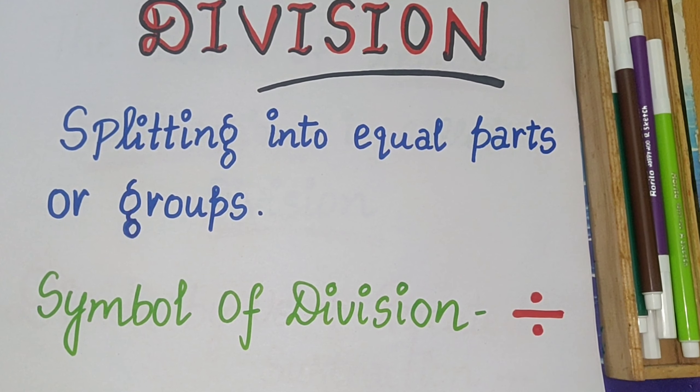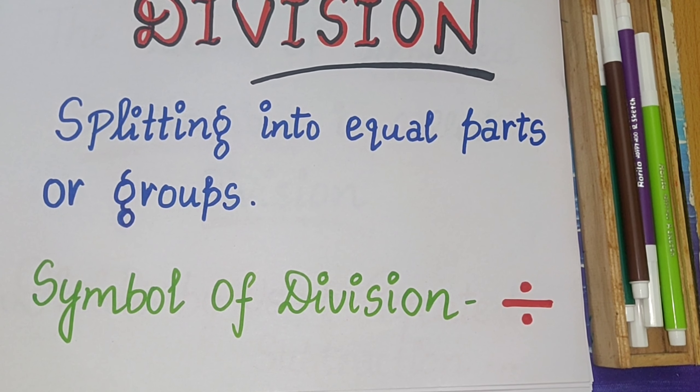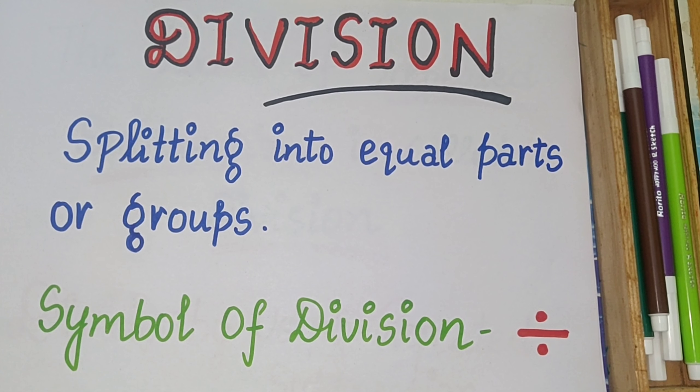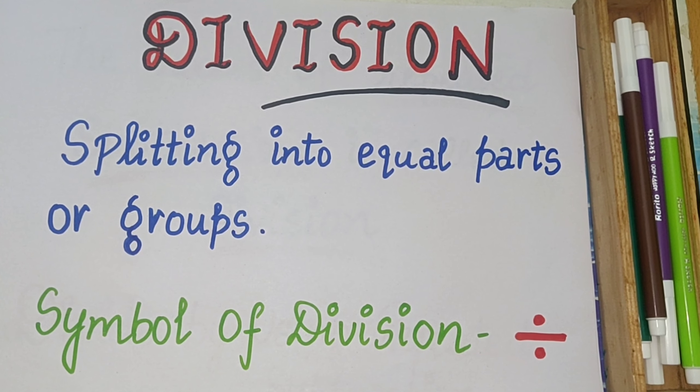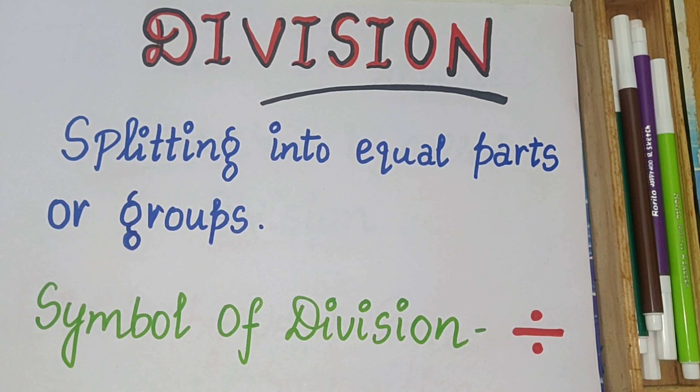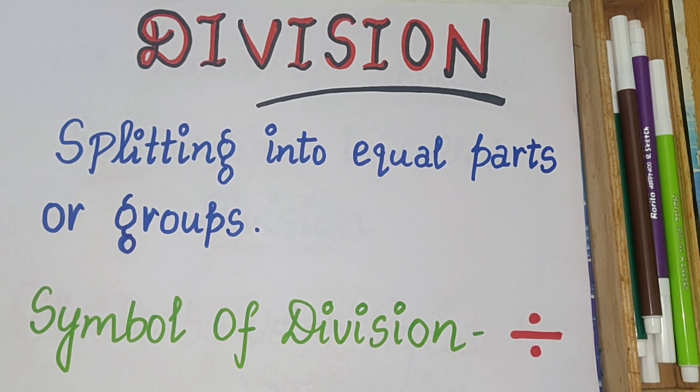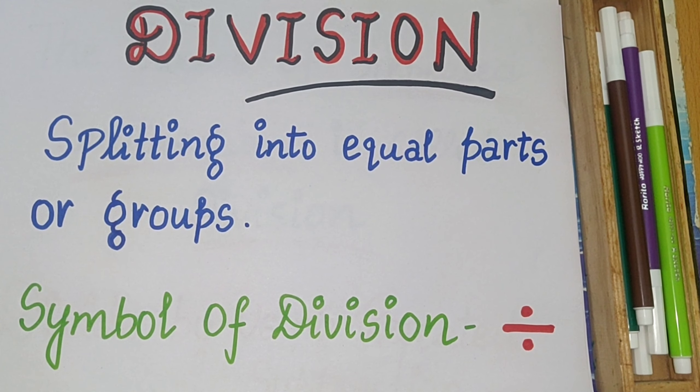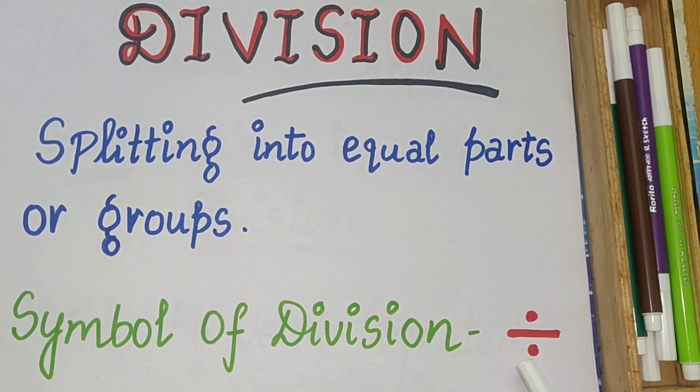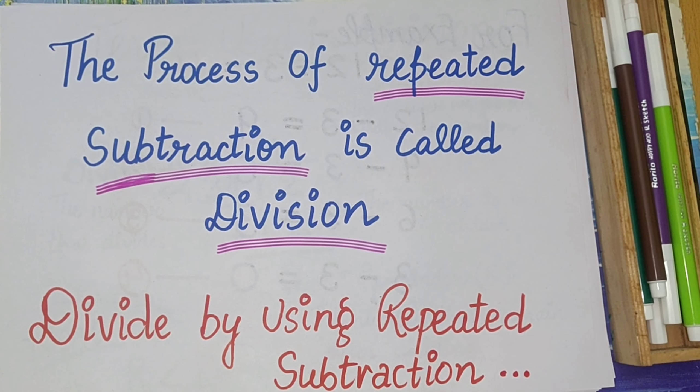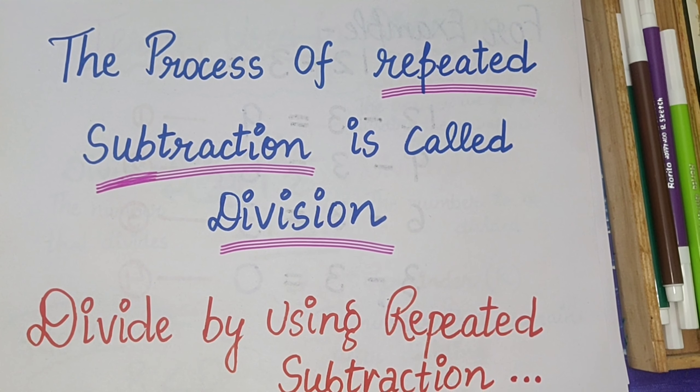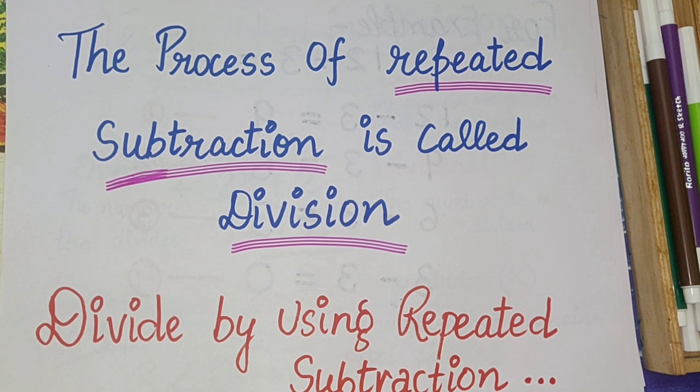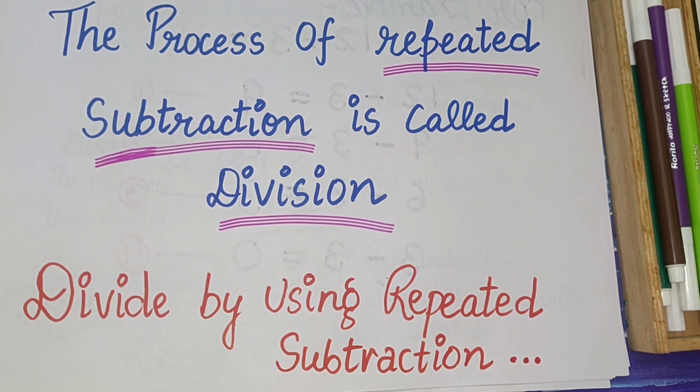You also use it but we don't realize it, like we used to share something into equal parts among siblings, like cookies or something else. We divide that thing into equal parts so that everybody gets equal sharing. The symbol of division is this, and we also say that the process of repeated subtraction is called division.